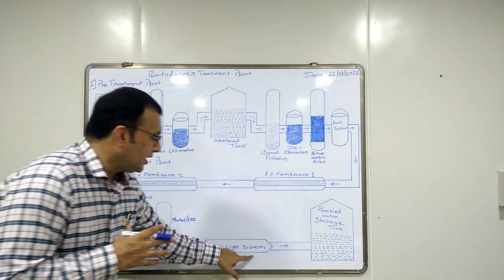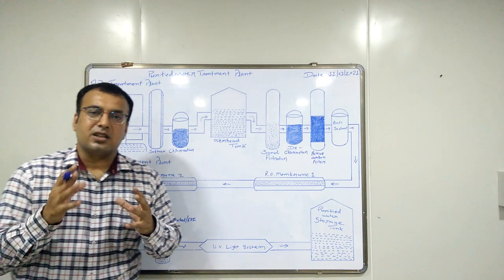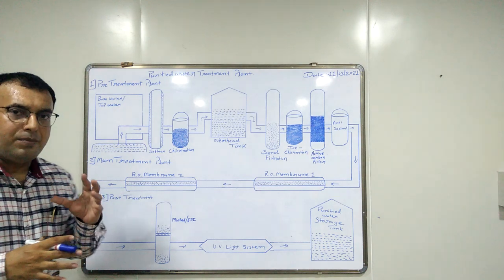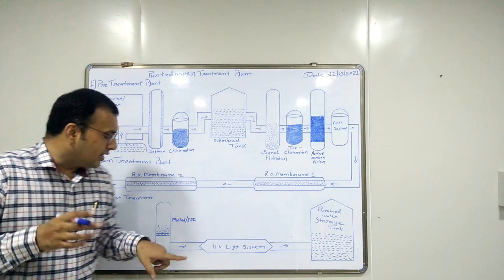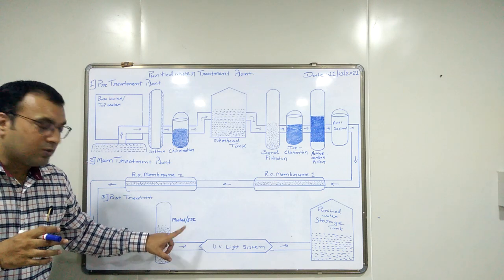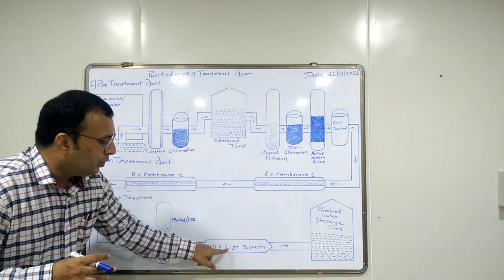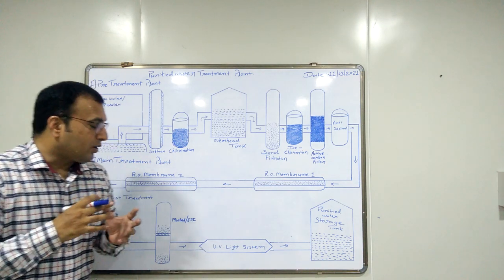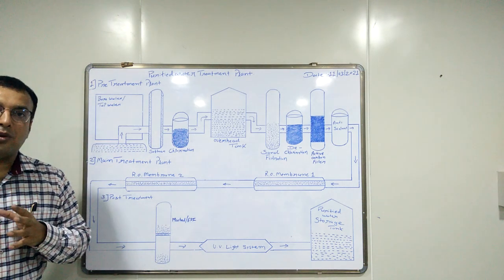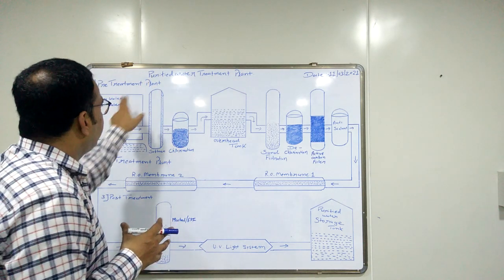Next is the UV system. There is UV light in this UV system and this UV light works as a disinfectant. During regeneration of the mixed bed unit, some microorganisms may be introduced into the water and these must be removed. So whenever the water passes through the UV system, the UV light kills these microorganisms. The main function of the UV system is to kill microorganisms and remove them from the water.